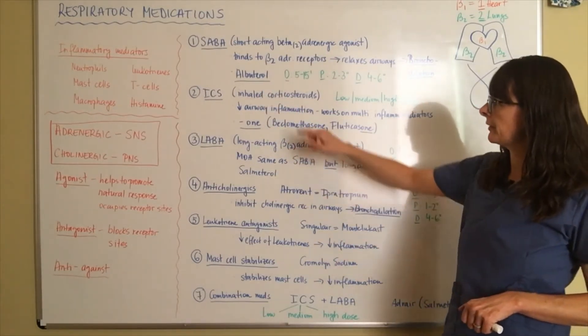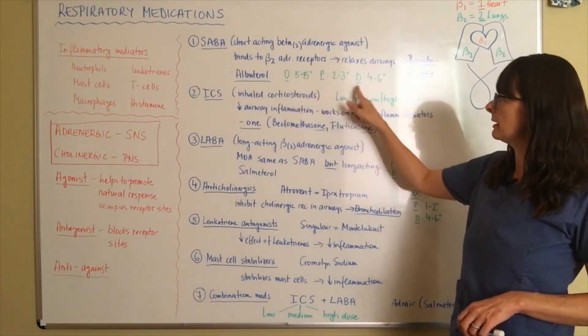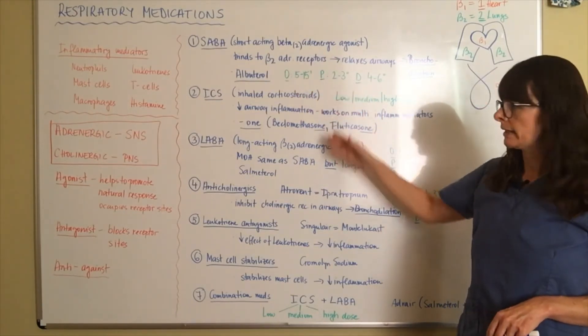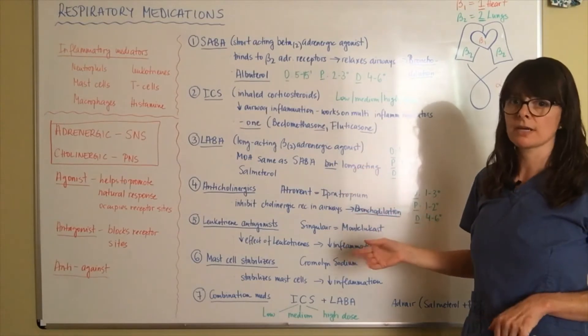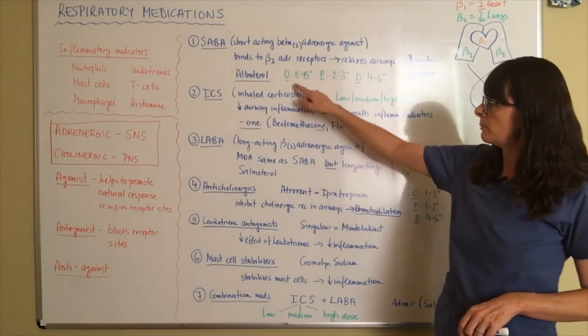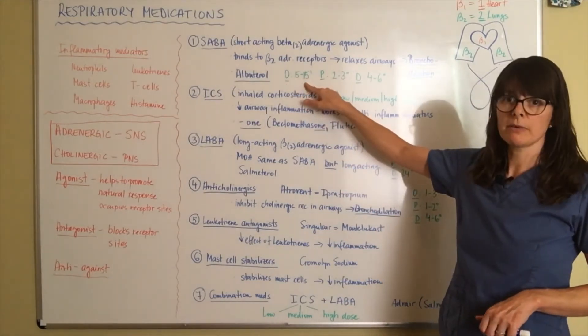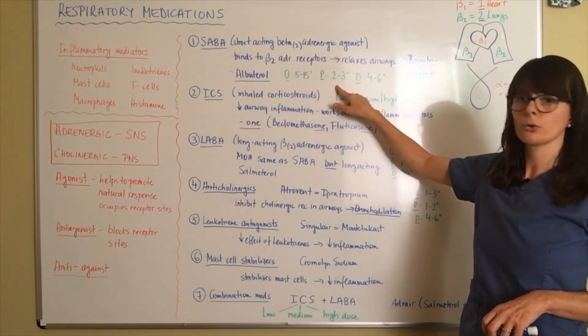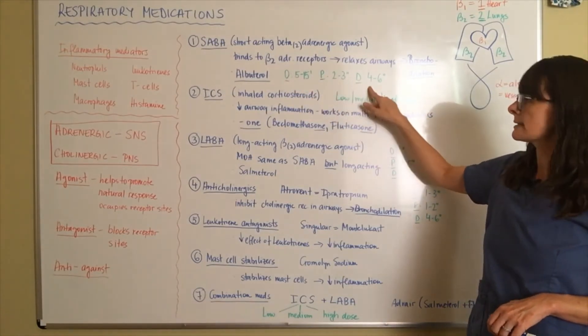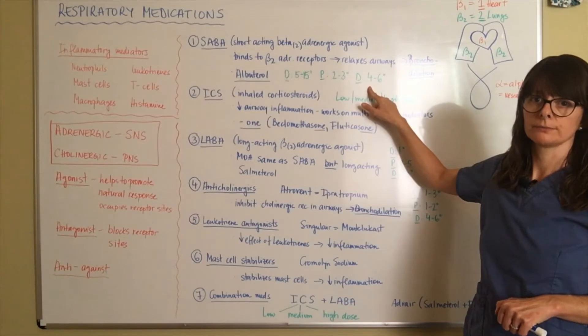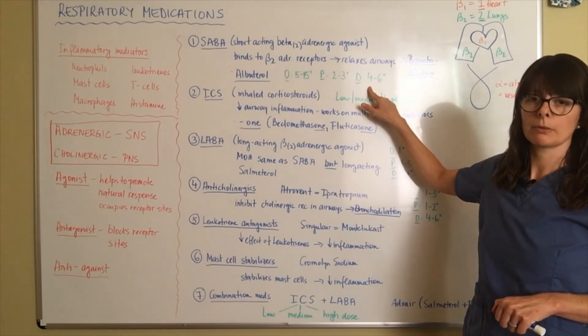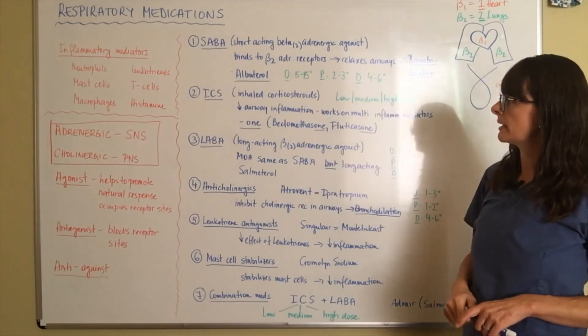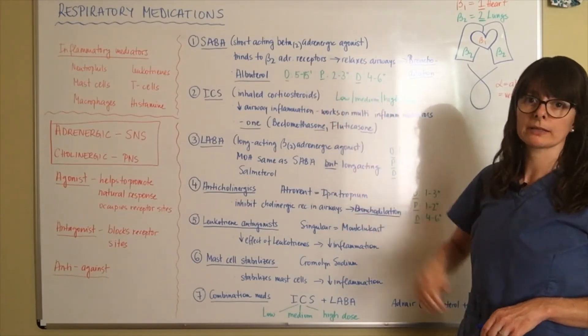So therefore short acting beta-2 pertaining to the lungs, adrenergic sympathetic nervous system agonist, it's going to help to promote that natural response by relaxing the smooth airway muscle and causing bronchodilation. And really the only SABA there is, is albuterol. I'm sure you've heard about it. It's the most commonly used inhaled medication. Now I've written down here, OP and D, which is onset, peak, and duration, because later we'll compare it to some of these other medications. So albuterol, the onset is 5 to 15 minutes. Its peak occurs at 2 to 3 hours and it lasts for about 4 to 6 hours.